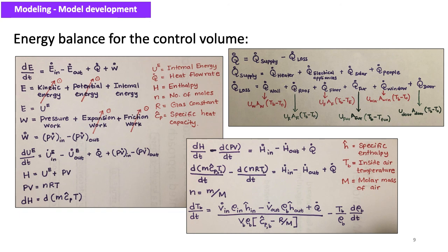Q_dot is the total heat flow rate from sources other than ventilation, equal to Q_dot_supply minus Q_dot_loss. Q_dot_supply is the energy supplied by heaters, electrical equipment, solar irradiation, and people. The energy loss terms include losses through the walls, roof, floor, furniture, windows, and doors.